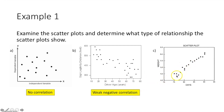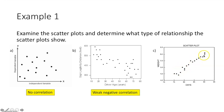Part C: are the points going up and to the right or down and to the right? They're going up and to the right, so it's a positive correlation. Is it perfect, strong, or weak? You can't draw a line through all the points, so it's not perfect. But it's pretty close to a straight line — the points are all pretty bunched up together — so this is a strong positive correlation.